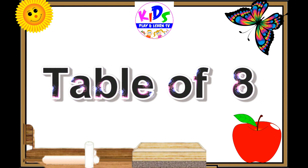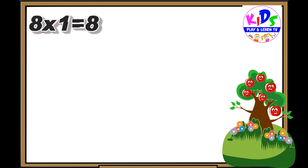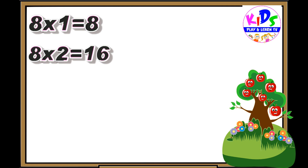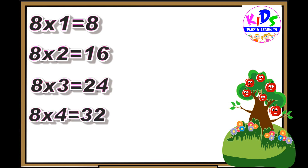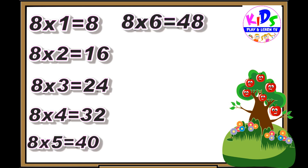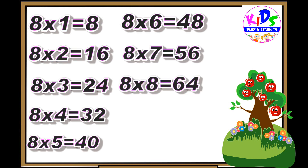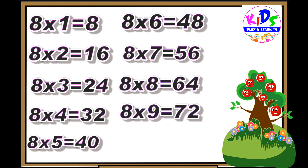Let's repeat. Eight ones are eight, eight twos are sixteen, eight threes are twenty-four, eight fours are thirty-two, eight fives are forty, eight sixes are forty-eight, eight sevens are fifty-six, eight eights are sixty-four, eight nines are seventy-two, eight tens are eighty. Thank you.